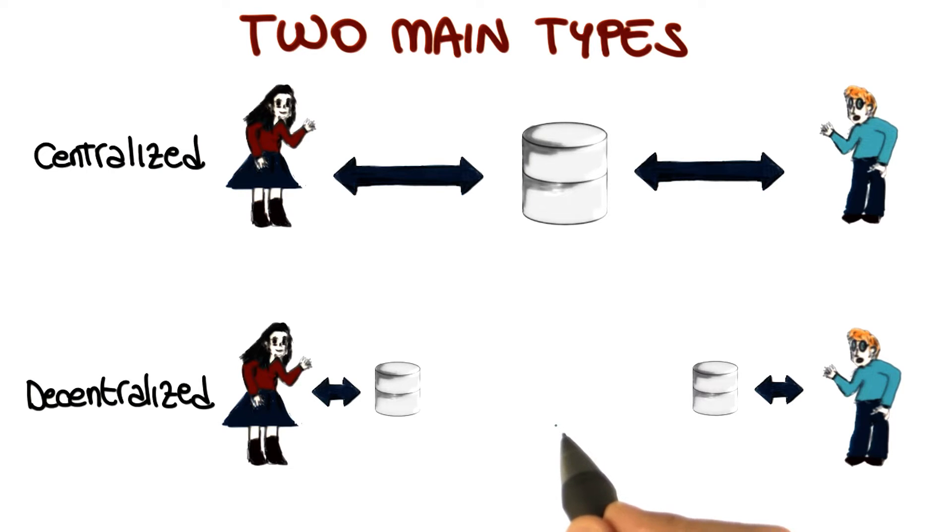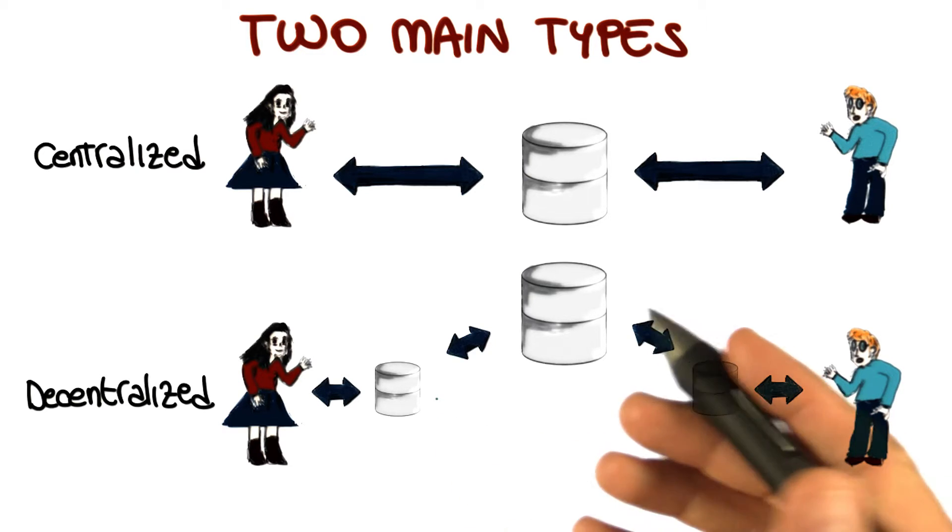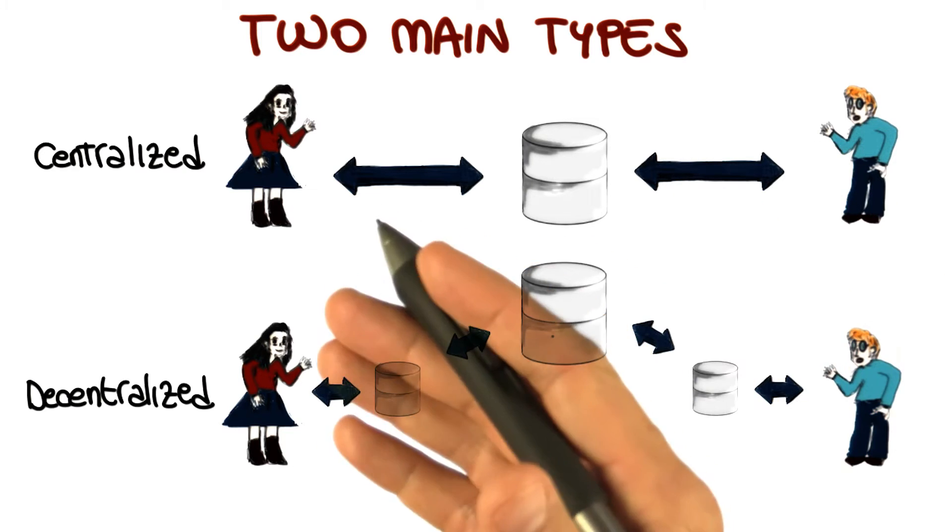And when they're happy with the version, and when they're ready to release the version, they can push it to a central repository. And at that point, it will become available to the other users of the repository, to the other users of the VCS.